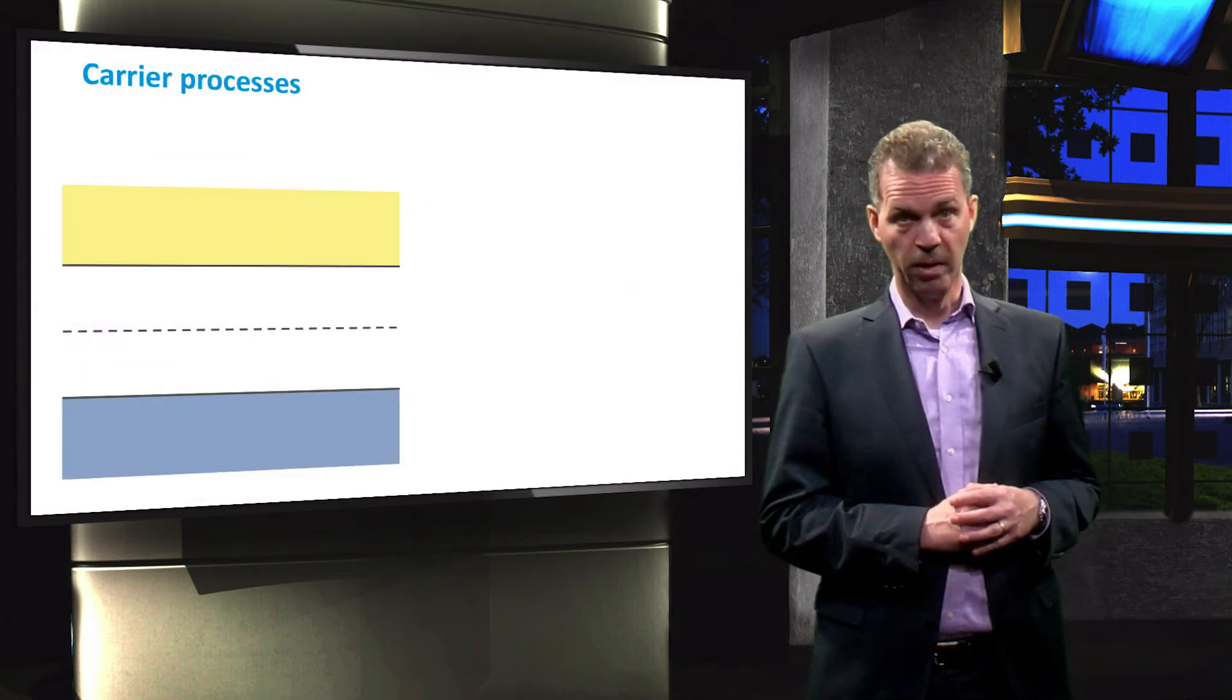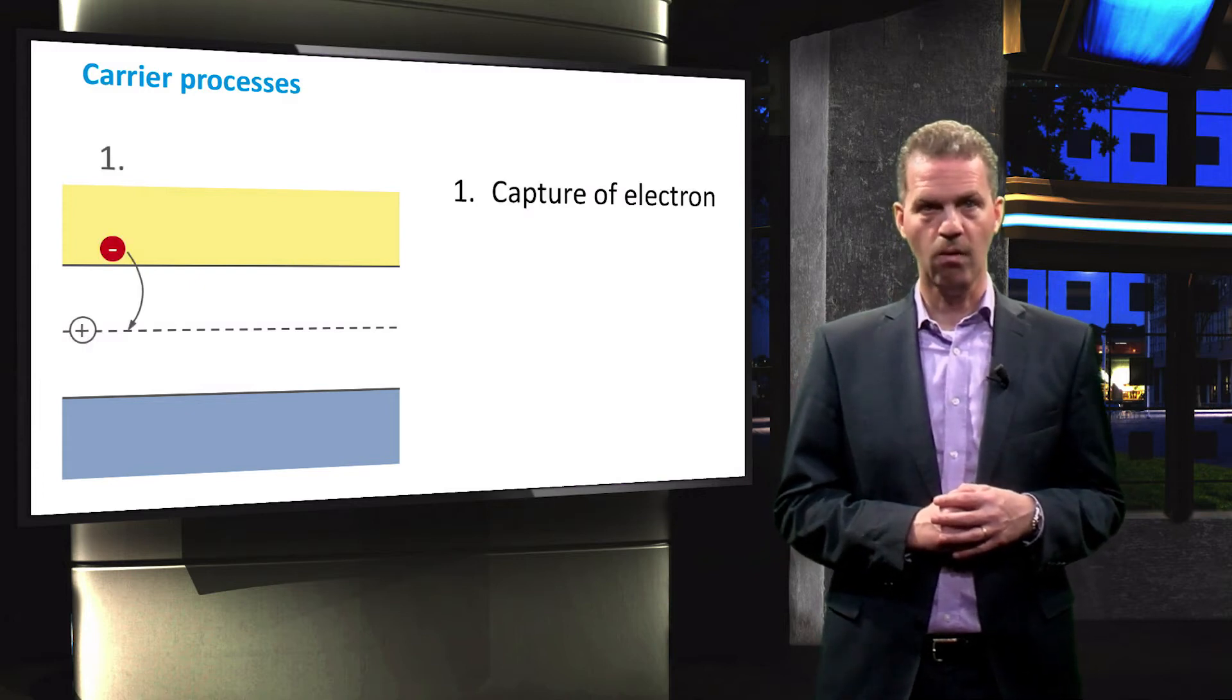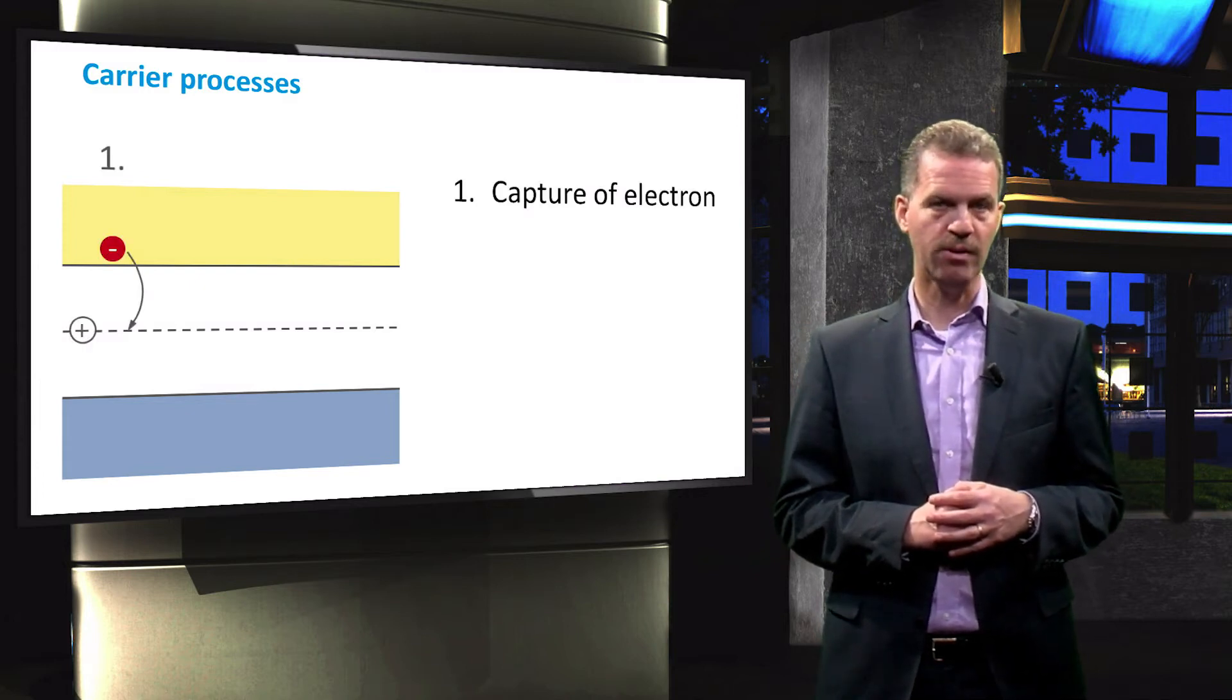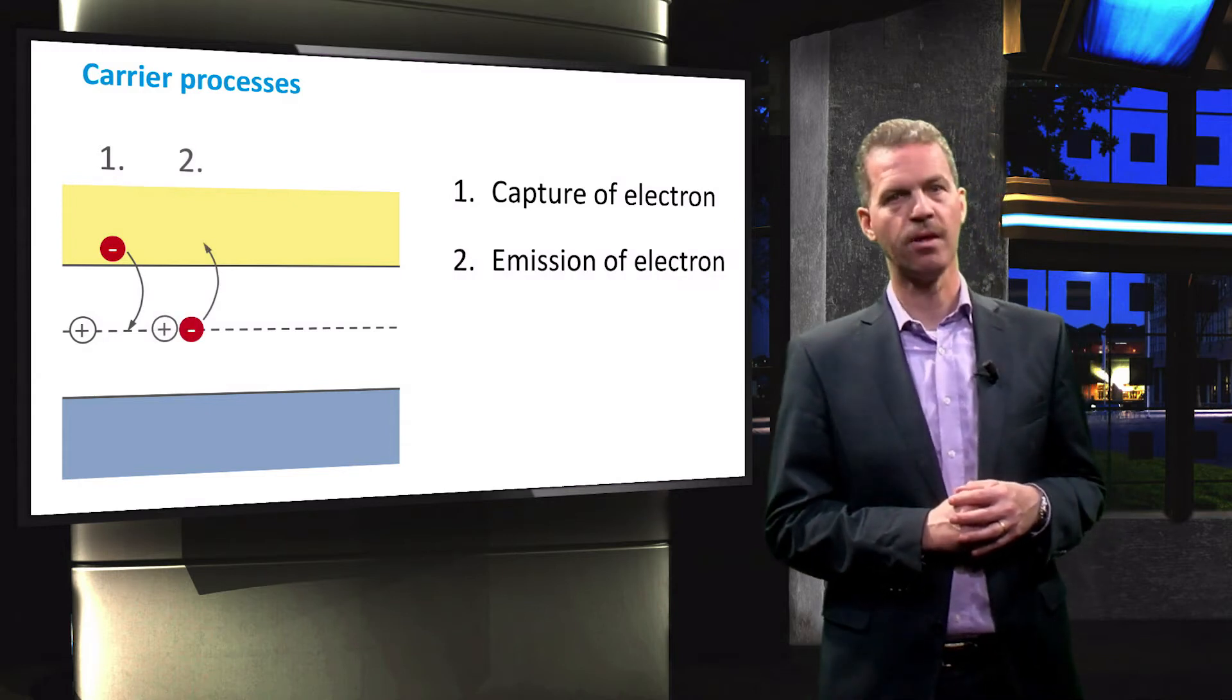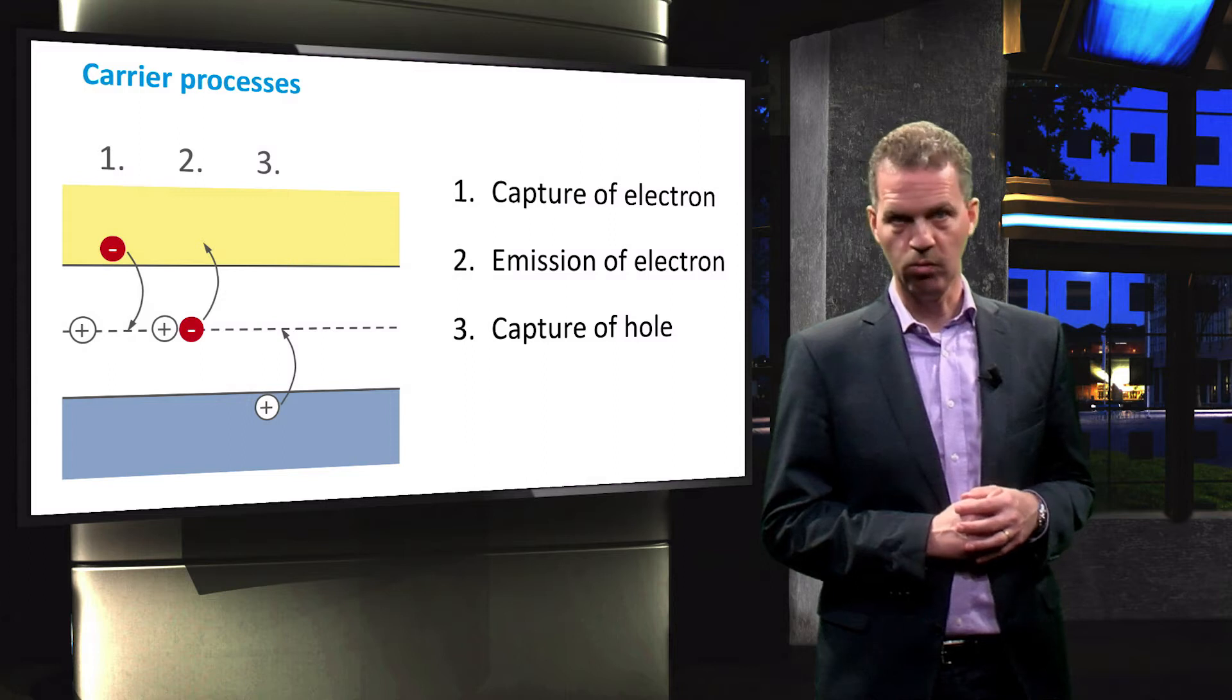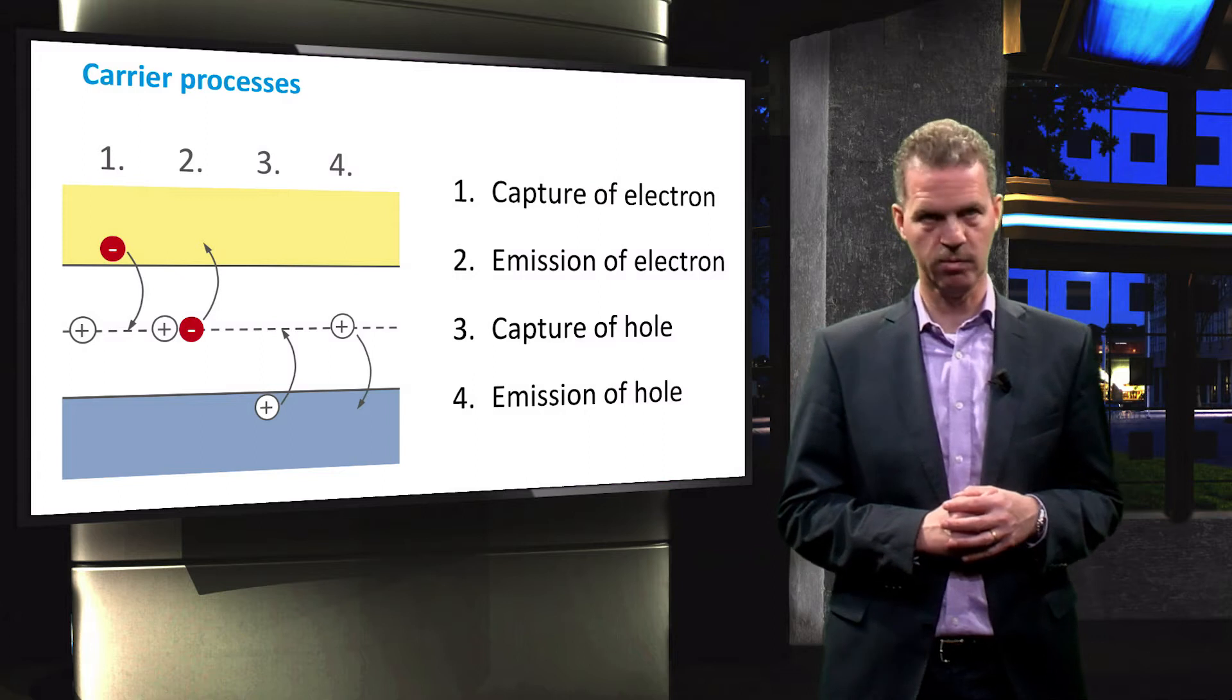SRH recombination is based on four processes. 1. Capture of an electron from the conduction band. 2. Emission of an electron to the conduction band. 3. Capture of a hole from the valence band. 4. Emission of a hole to the valence band.